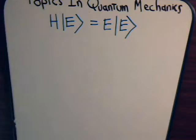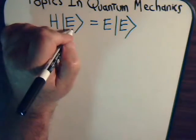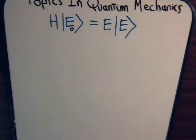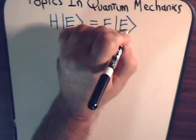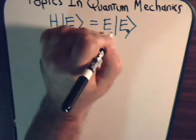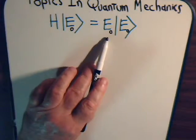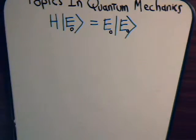What we want to consider first is what happens when the Hamiltonian operates on the lowest possible eigenstate in the system. This is the lowest possible eigenvalue or the lowest possible observable energy in the system.